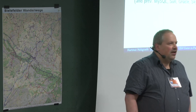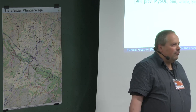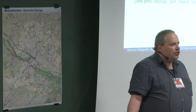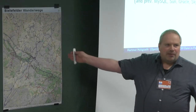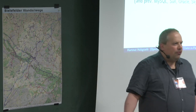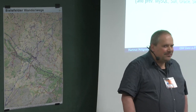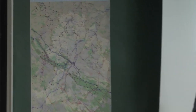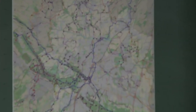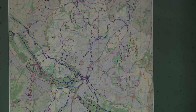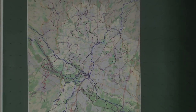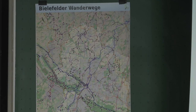Somehow I got into OpenStreetMap and mapping things some 12 years ago. In my day job I'm working as a data bias support engineer and do not do anything map-related at all. Today I will show you how to easily create printable maps from OpenStreetMap using a hopefully simple web interface. I've given this talk here two times in the two previous years already.